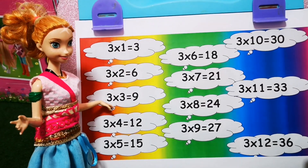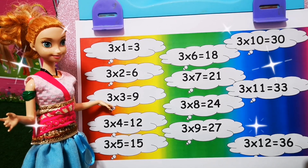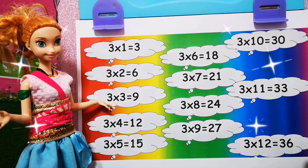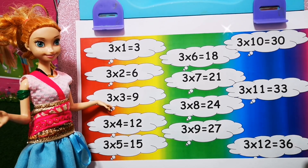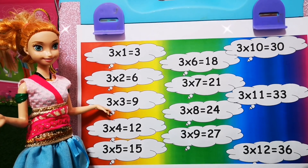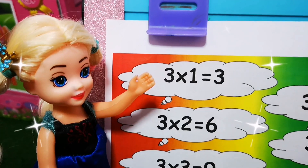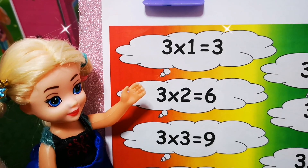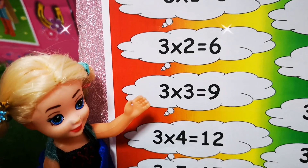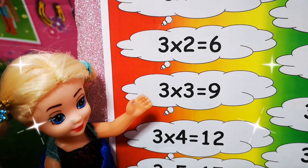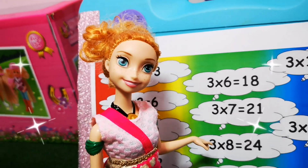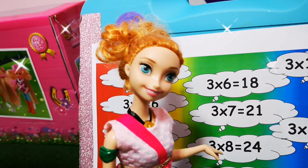Okay so students, now we are going to revise. Remember to practice at home so that you get better at your three times table. Now I'm going to call one of you to come up here and revise it. I'm going to call you Rose. Thank you Rose, and well done. Now I'm going to call someone else up.